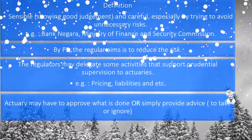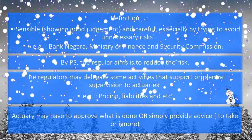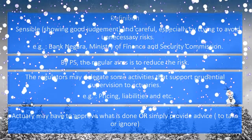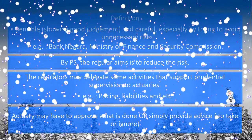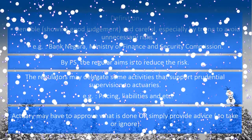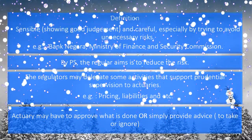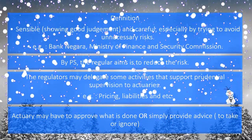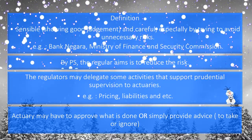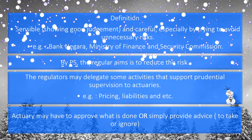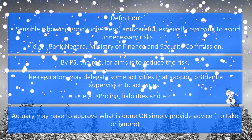Prudential supervision is sensible, which means showing good judgment and being careful, especially by trying to avoid unnecessary risks, like the Bank Negara, Ministry of Finance, and Security Commission. By prudential supervision, the regulator aims to reduce risk, which we will explain in the next slide. The regulators may delegate some activities that support prudential supervision to actuaries, such as pricing, liabilities, and more that will be explained in further slides.